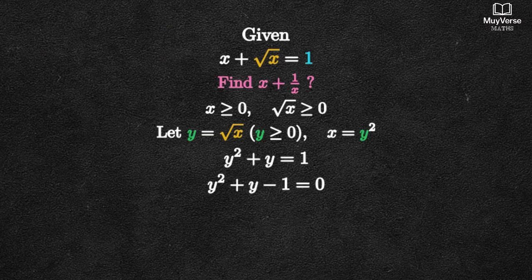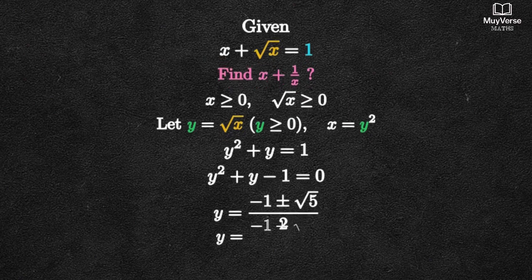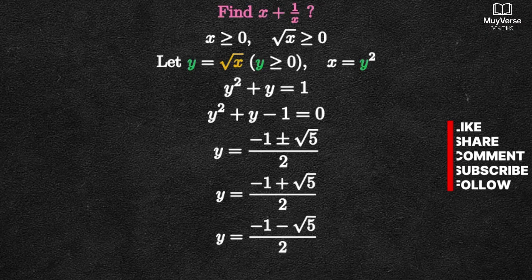We solve the quadratic in y. Using the quadratic formula, we get y equals negative 1 plus or minus square root of 5 all over 2. That gives two candidates: y equals negative 1 plus square root of 5 over 2 and y equals negative 1 minus square root of 5 over 2.